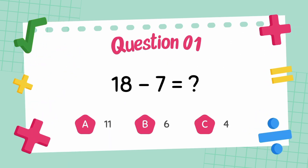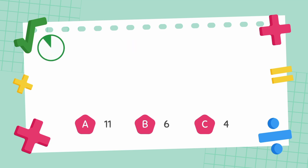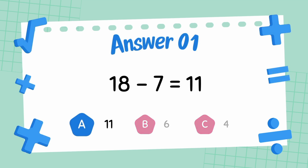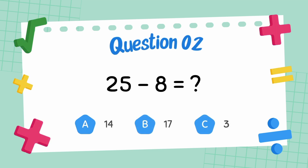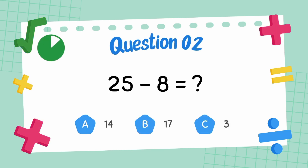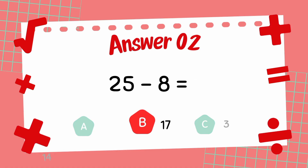What is 18 minus 7? The answer is 11. What is 25 minus 8? The answer is 17.